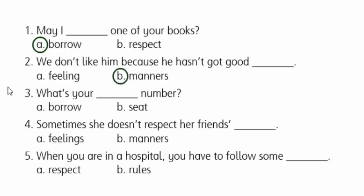Number three: 'What's your __ number?' The choices are 'power number' or 'seat number.' This is used in places where seats are numbered, for example on a plane — 'What's your seat number?' Number four: sometimes she doesn't respect her friend's feelings or manners. That's right — her friend's feelings.